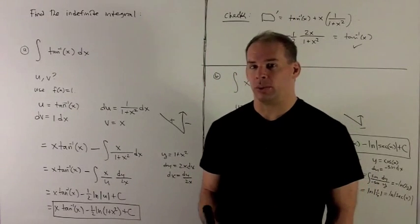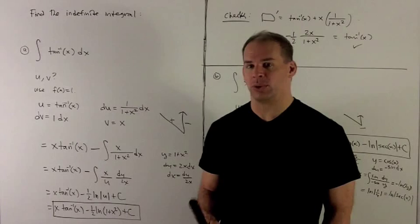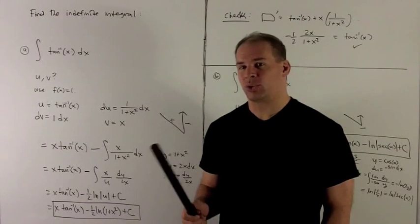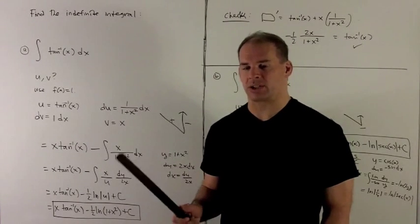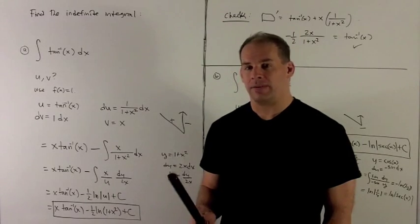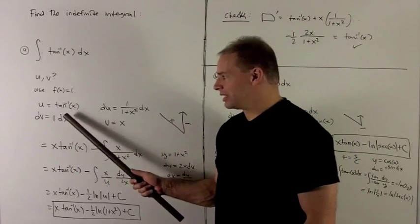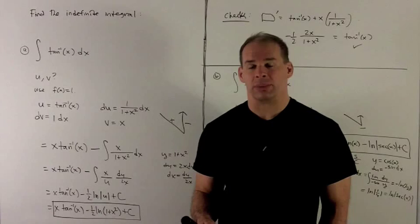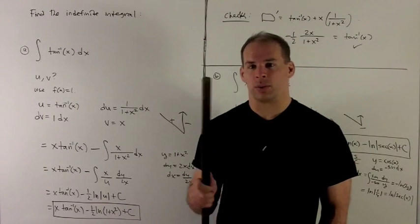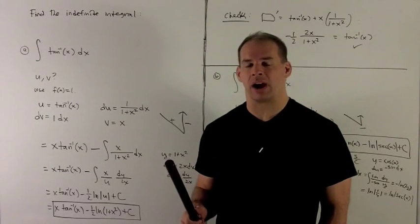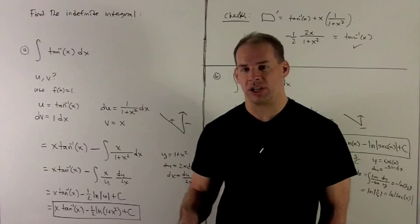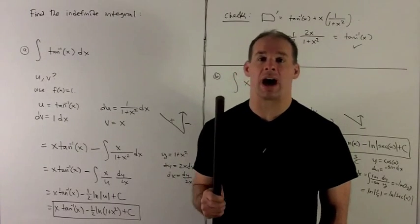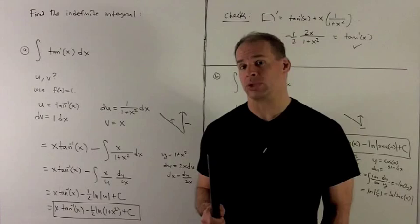That's going to force me to keep u as tan inverse of x. Now another reason we want u equal tan inverse of x is if we do a little foreshadowing, its derivative is one over one plus x squared. If we have our dv as dx, its antiderivative is going to be x. So when that x hits the one over one plus x squared, that's looking like a function in the bottom with its derivative on top. And that we can kill with a u substitution.